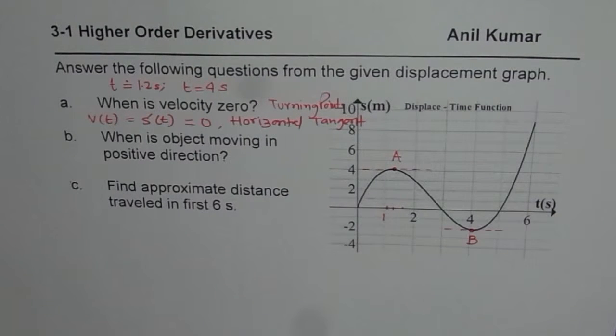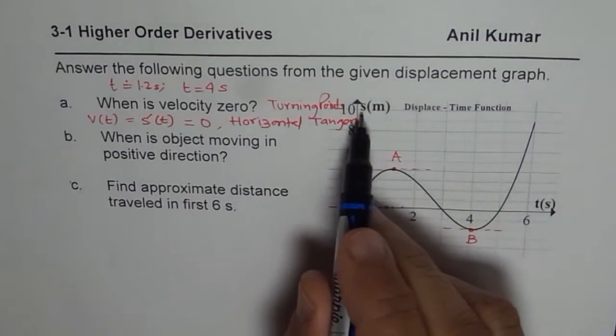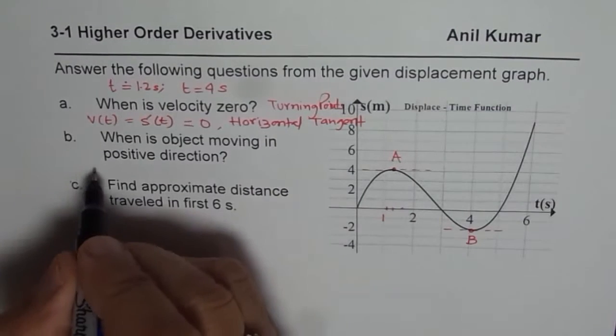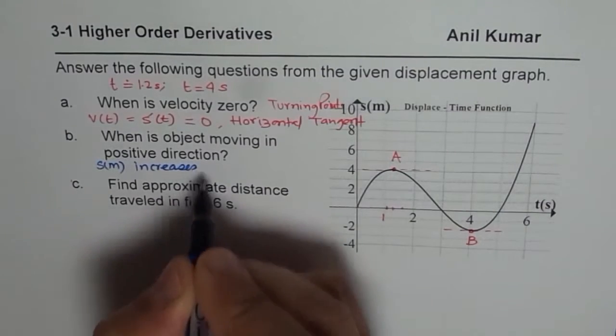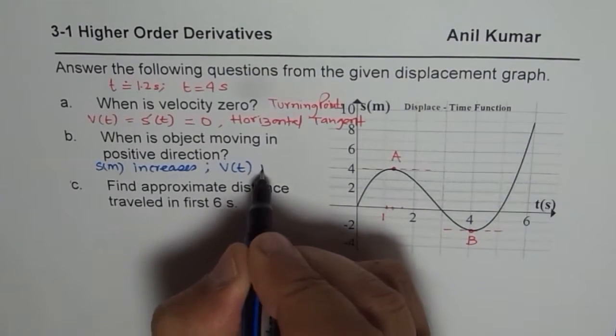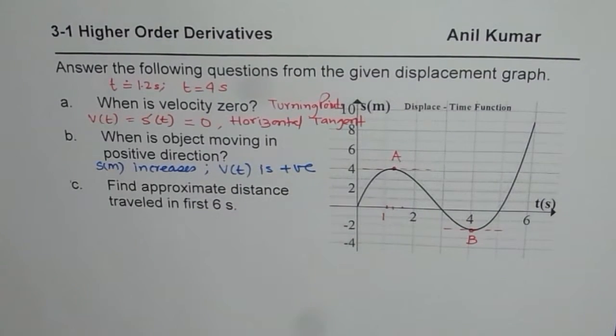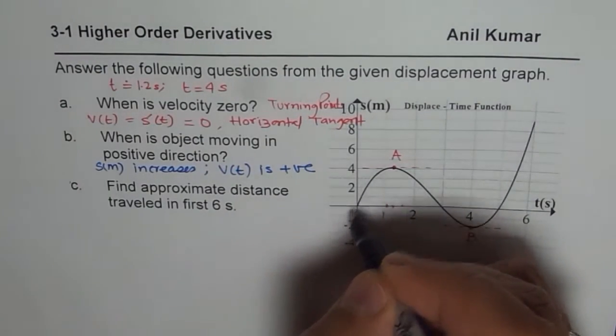So where the velocity is 0. So part B is when is object moving in positive direction? Now what does that mean? Object moving in positive direction. So when object moves in positive direction displacement increases. That means displacement increases. You could also say positive direction means that the velocity is positive. So velocity positive means that if I draw a tangent line it has a positive slope.